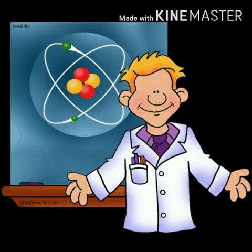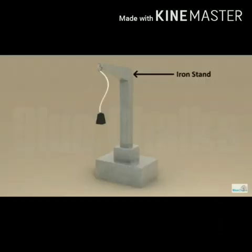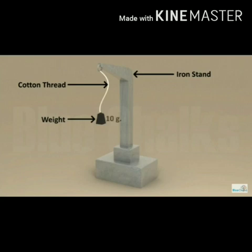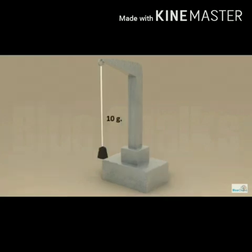Let us perform an activity to test the strength of fibers. For this activity, take a long thread of cotton and nylon. Take an iron stand with a clamp. Tie one end of the cotton thread to the clamp so it hangs freely. Tie a pan to the lower end of the cotton thread so that weights can be placed in it.